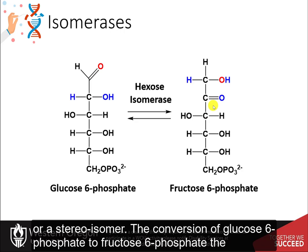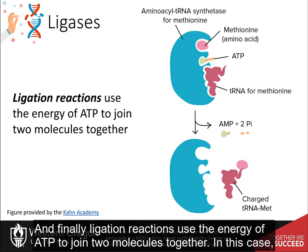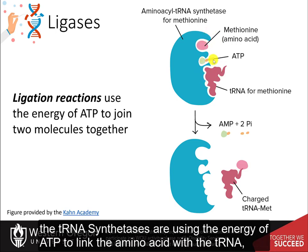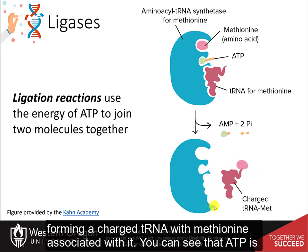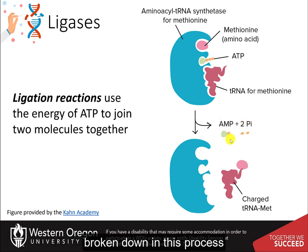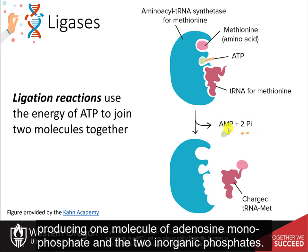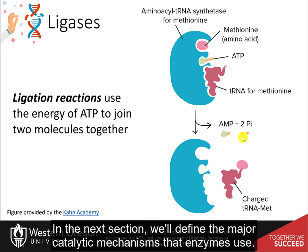The conversion of glucose-6-phosphate to fructose-6-phosphate, which are structural isomers, is shown here. Ligation reactions use the energy of ATP to join two molecules together. For example, tRNA synthetases use ATP energy to link an amino acid with transfer RNA, forming a charged tRNA with methionine. ATP is broken down in this process, producing one molecule of adenosine monophosphate and two inorganic phosphates. In the next section, we'll define the major catalytic mechanisms that enzymes use.